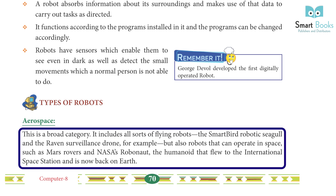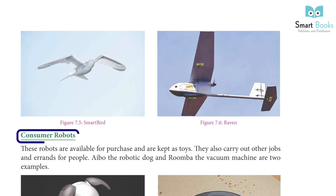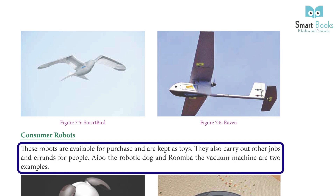Types of robots — Aerospace: This is a broad category that includes all sorts of flying robots, such as the Smart Bird robotic seagull and the Raven surveillance drone. It also includes robots that can operate in space, such as Mars rovers and NASA's Robonaut — the humanoid that flew to the International Space Station.